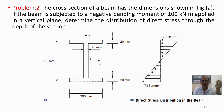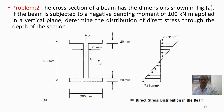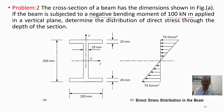This is the second problem on direct stress. The cross-section of a beam has the dimensions shown in figure A. The beam is subjected to a negative bending moment of 100 kilo-Newton meters applied in a vertical plane. We need to determine the distribution of direct stress over the depth of the section. Since the bending moment is applied in a vertical plane, it is Mx, and it acts in the negative direction.